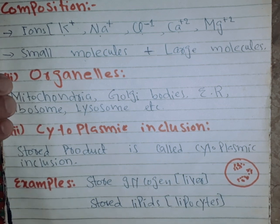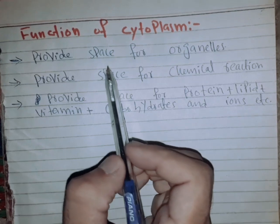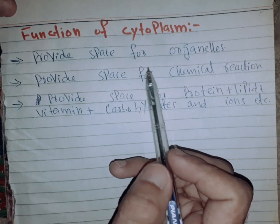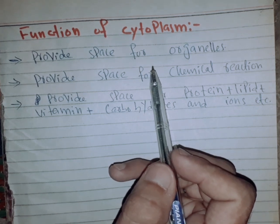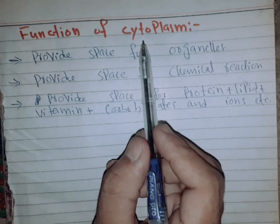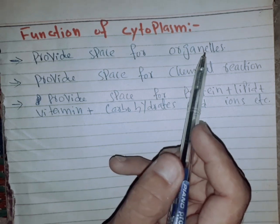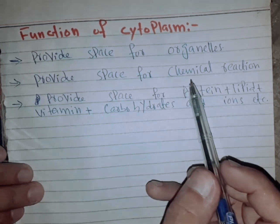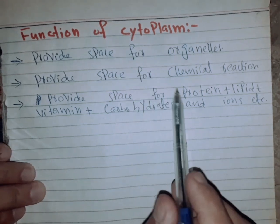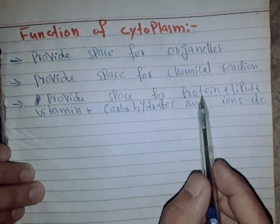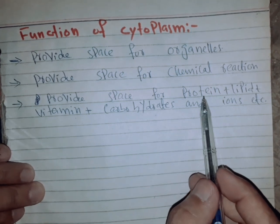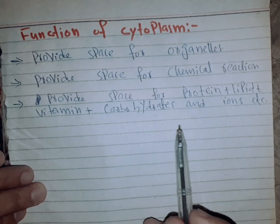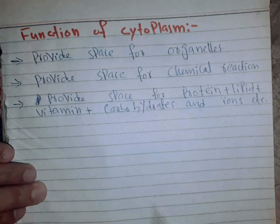The functions of cytoplasm: cytoplasm provides space for organelles such as mitochondria, Golgi bodies, endoplasmic reticulum, and lysosomes. It also provides space for chemical reactions to occur. Additionally, cytoplasm provides space for proteins, lipids, vitamins, carbohydrates, and other chemicals to be stored and moved.